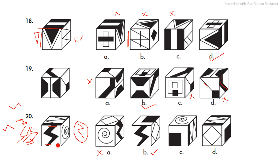If the box is not rotated at all, we should also see the same adjacent faces as in the original. We should have seen the Z-shape on top and the jalebi-like structure on the side as well, but this is not the case in option B. So option B is also eliminated.